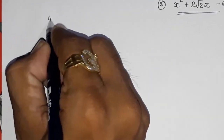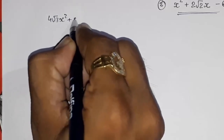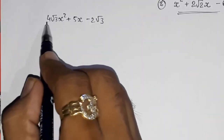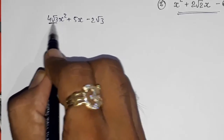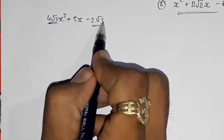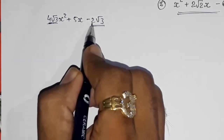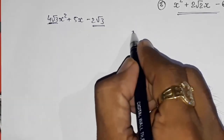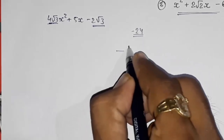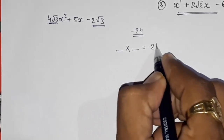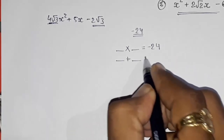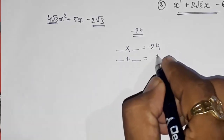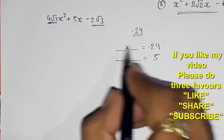Here I'm solving 4√3x² + 5x - 2√3 by splitting the middle term, the same way we do in simple sums. First we multiply the coefficient of x² and the last term — that is a and c — so 4 × 2 = 8, and √3 × √3 = 3, giving us minus 24. Now we have to find factors whose product is minus 24 and whose sum is the coefficient of x, which is plus 5.